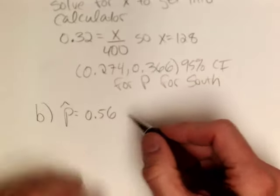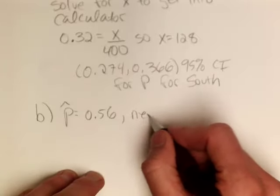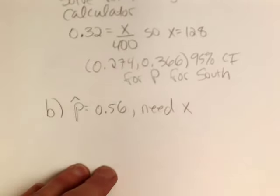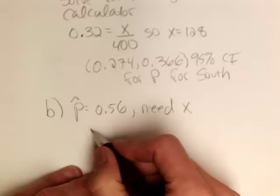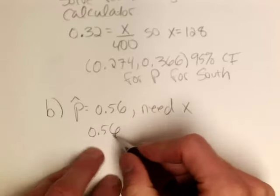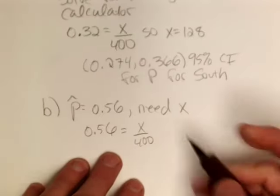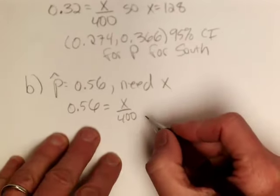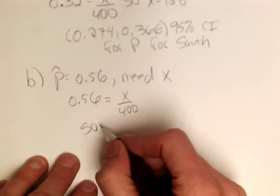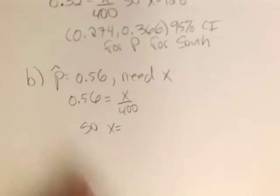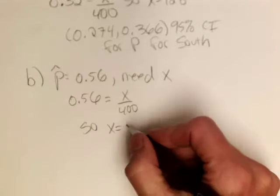So again, to get into the calculator, I need x. So again, I need to solve this relationship for x. 0.56 is equal to x over 400. So in other words, I need to take 56% of 400. So x is equal to 224.